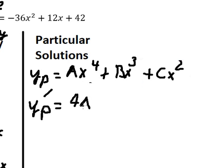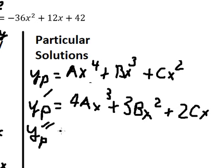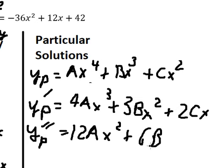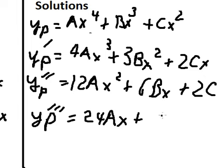Taking the first derivative of yp we get 4Ax cubed, 3Bx squared, and 2Cx. Taking the second derivative of yp we get 12Ax squared, 6Bx, and 2C.